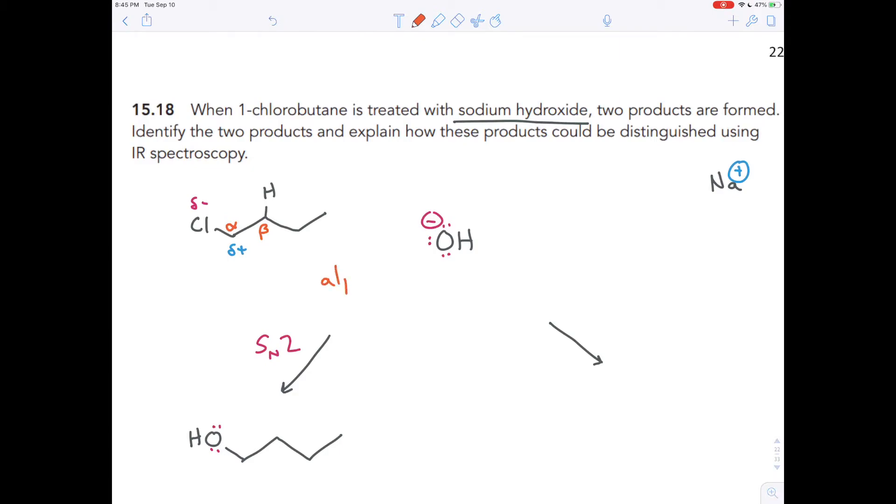After all, the alphabet is named after the first two letters of the Greek alphabet, alpha and beta. And so we've got our alpha carbon here, our beta carbon there. And so this hydrogen is called the beta, a beta hydrogen.